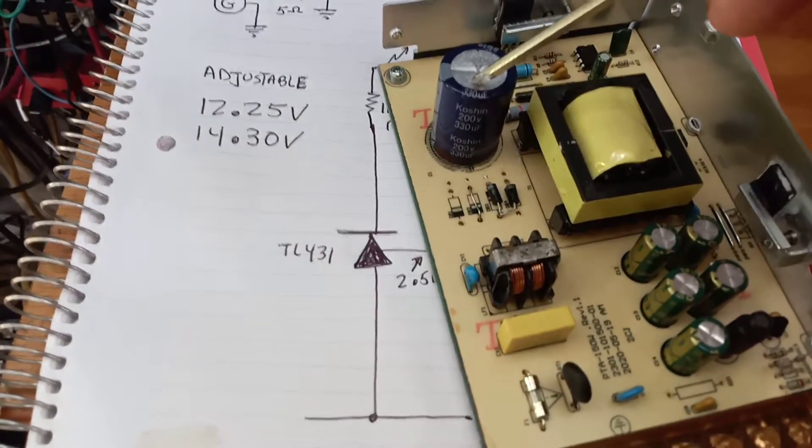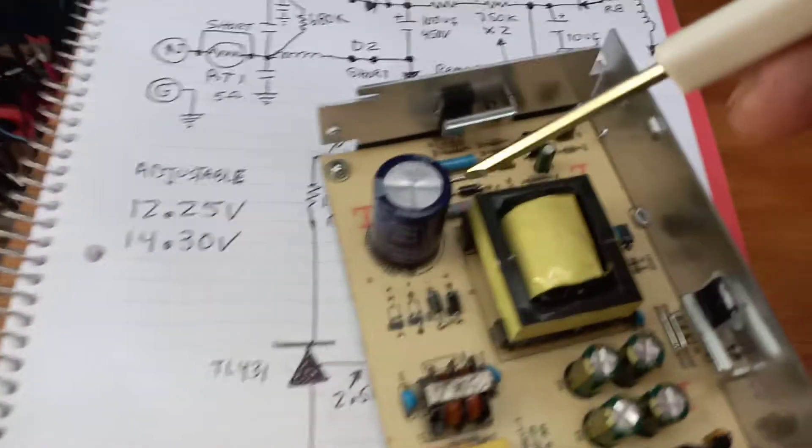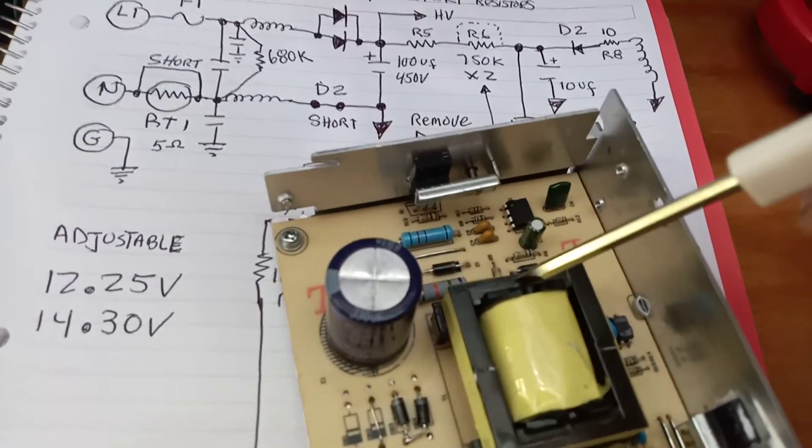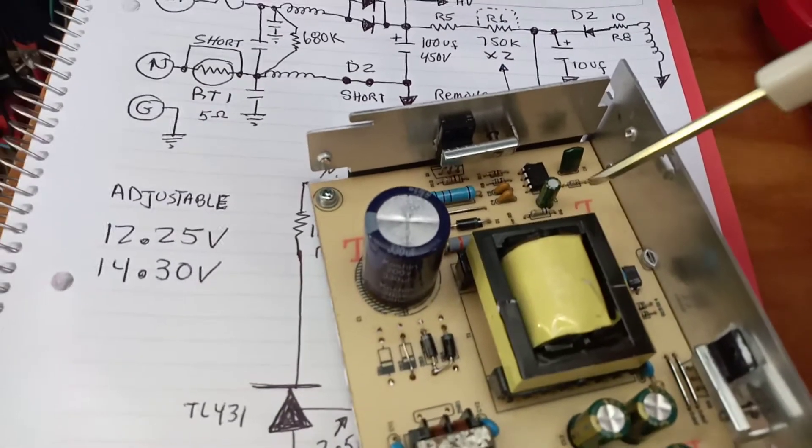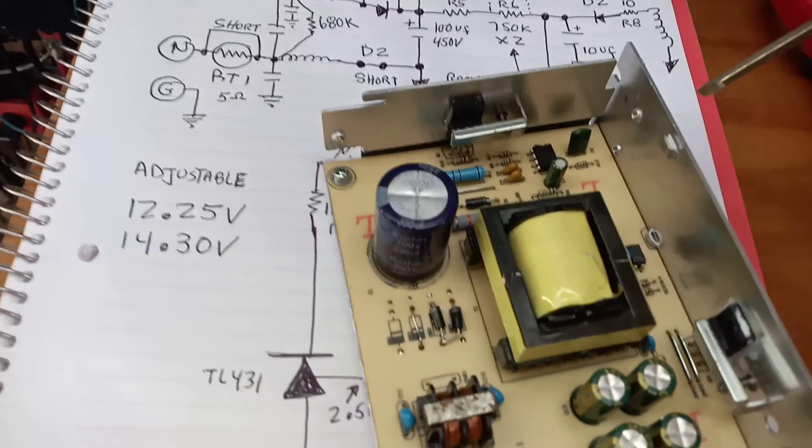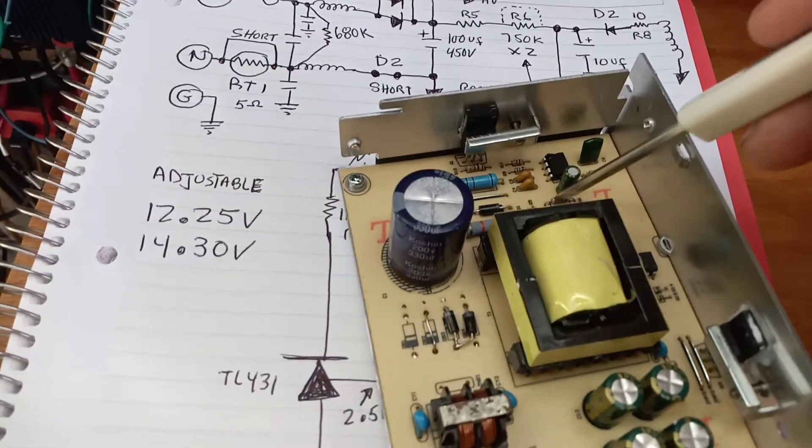There's two resistors here - this one and this one are in series, they're 750K. You can short one of them out, preferably short this one, and it'll start up a little quicker.